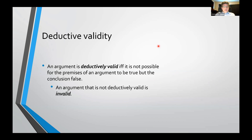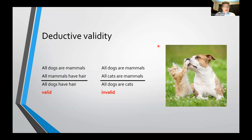And if the argument is not deductively valid, then it's invalid. For example: all dogs are mammals, all mammals have hair, therefore all dogs have hair.